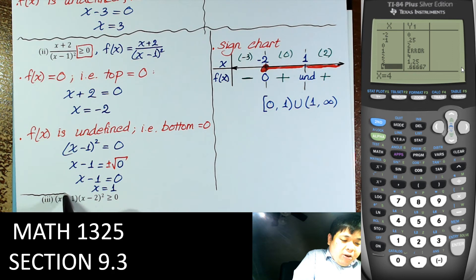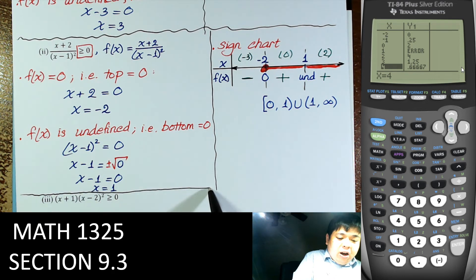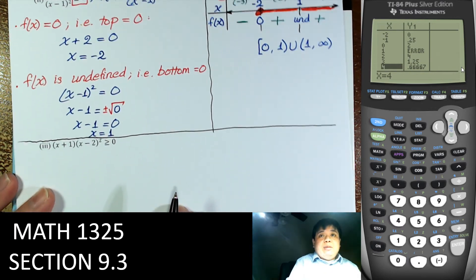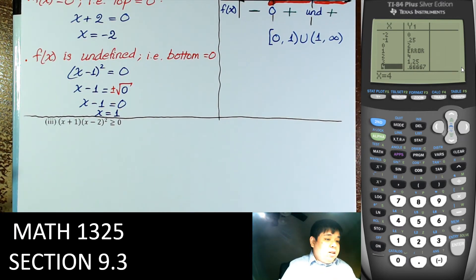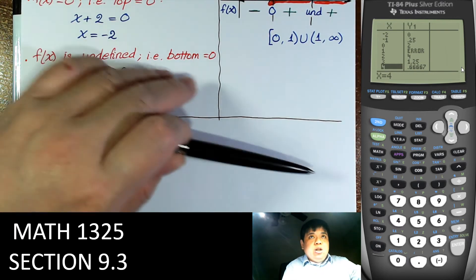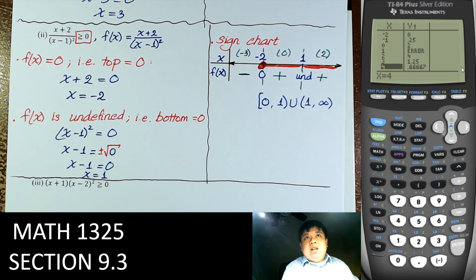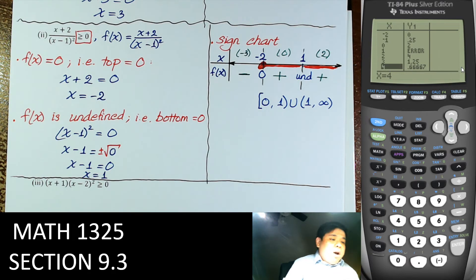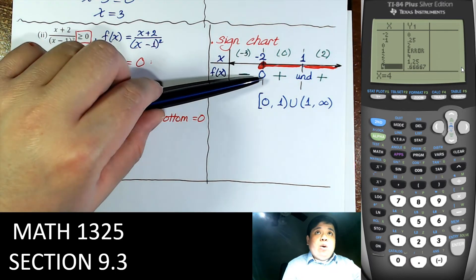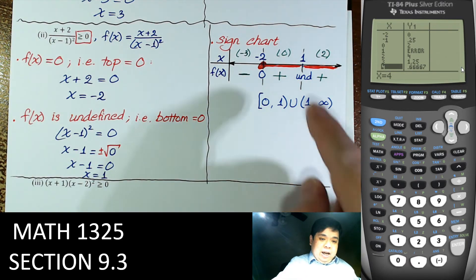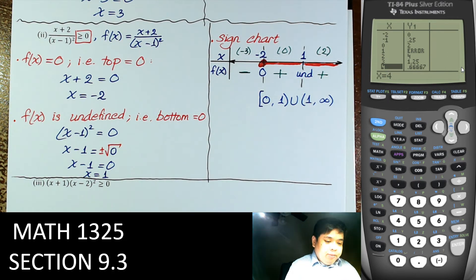So for where the function equals zero and where it is undefined: once we take care of those, only two possibilities remain — positive or negative. Be careful when there is an equal sign: we can include values where the function equals zero, but not where it is undefined.